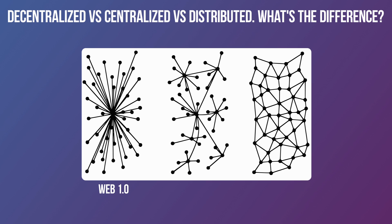The issue with centralized is if that one server went offline, your entire website went offline. Interestingly, we skipped decentralized and went to distributed systems with web 2.0. If you look at the diagram on the far right — distributed — you can think of this as Facebook, which has servers all around the globe in multiple data centers, each maintaining a copy of the Facebook data.